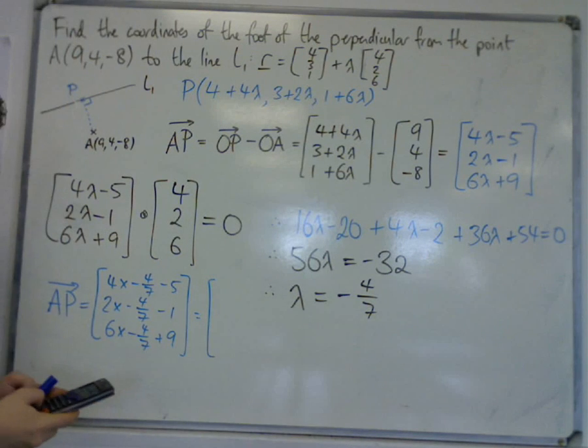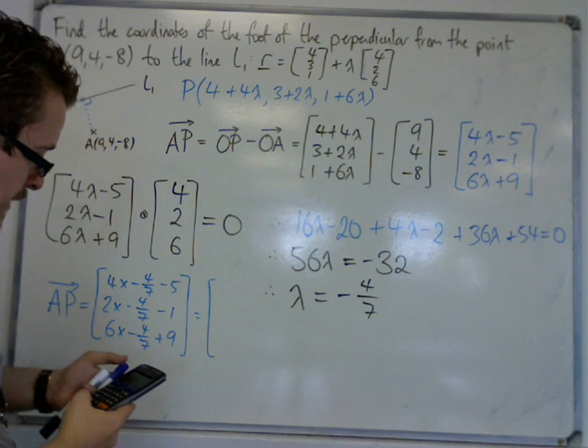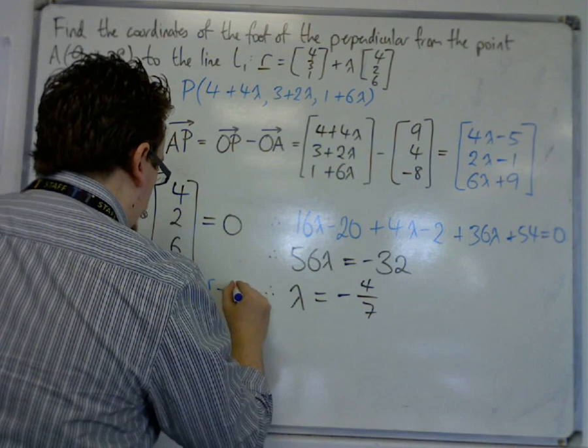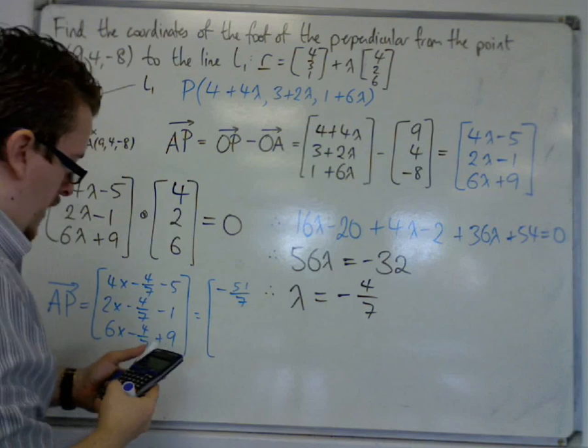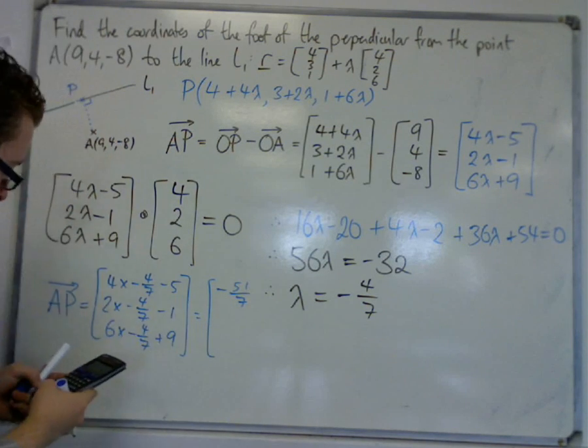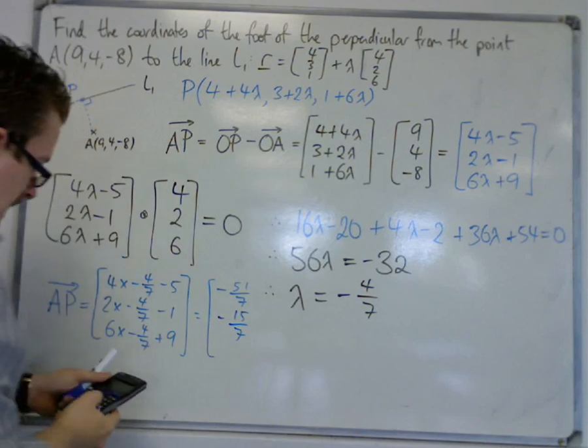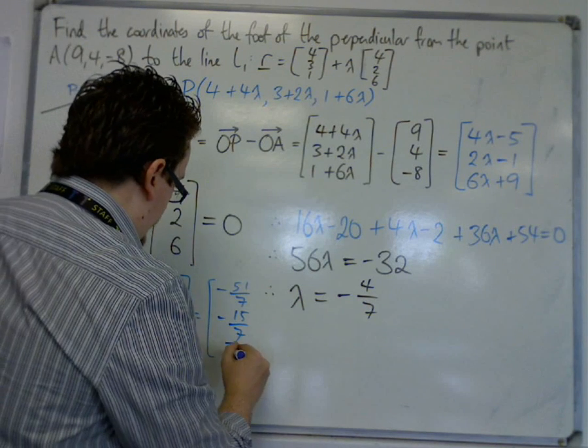Okay, so we've got 4 times minus 4 over 7, take away 5 is minus 51 over 7. We've got 2 times minus 4 over 7, take away 1 is minus 15 over 7. And we've got 6 times minus 4 divided by 7 plus 9 is 39 over 7.